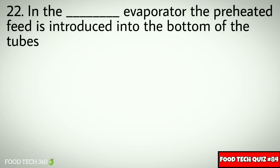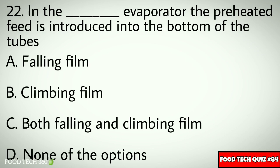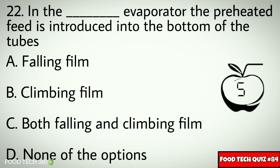Question number 22: In the dash evaporator, the preheated feed is introduced at the bottom of the tubes. Options: A. Falling film, B. Climbing film, C. Both falling and climbing film, D. None of the options. Correct answer: B. Climbing film.